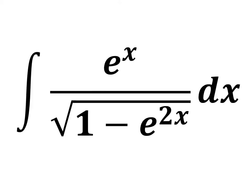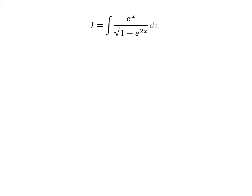In this video, we will learn to find the integral of exponential of x upon square root of 1 minus exponential of 2 times x. Let i be equal to the integral of exponential of x upon square root of 1 minus exponential of 2 times x with respect to x.